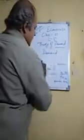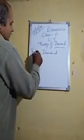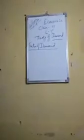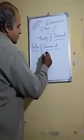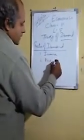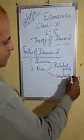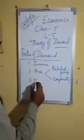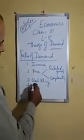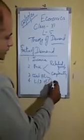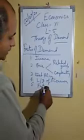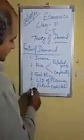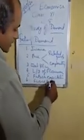Moving to the next topic — factors of demand. What are the factors which affect demand? First is income. Second is price, under which we consider related goods and complementary goods. Third is government policy. Fourth is likes and dislikes of the consumer. Fifth is future expectation. Sixth is science and innovation. So basically, these are the six factors which affect our demand. That's all for today — thank you and have a nice day.